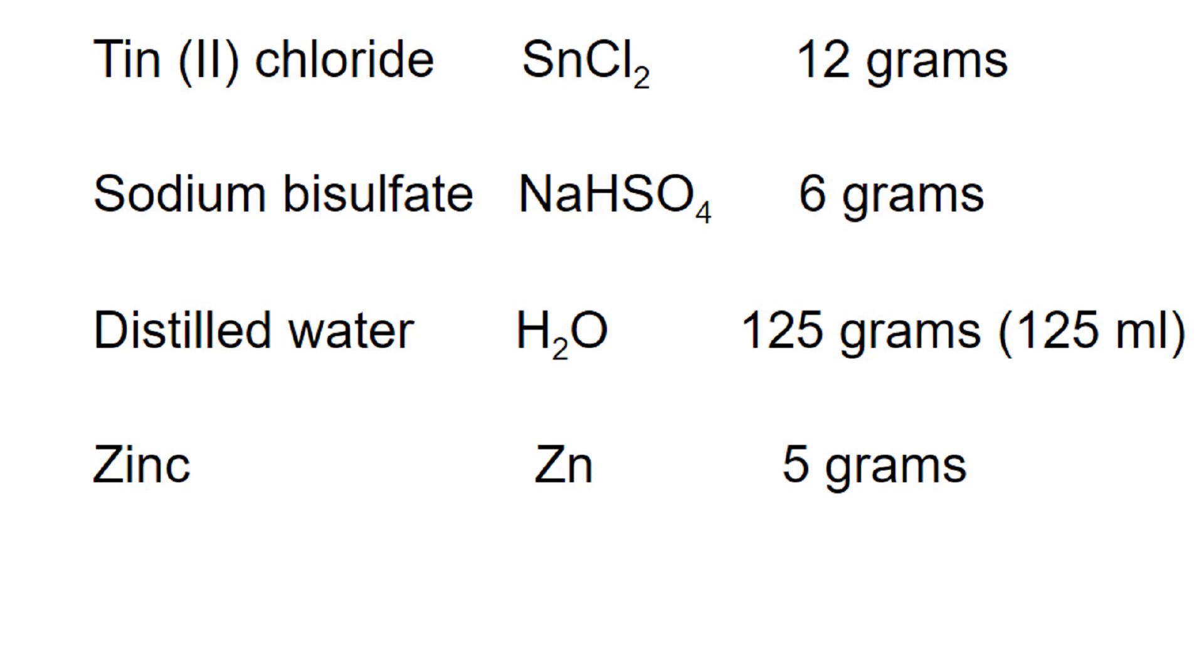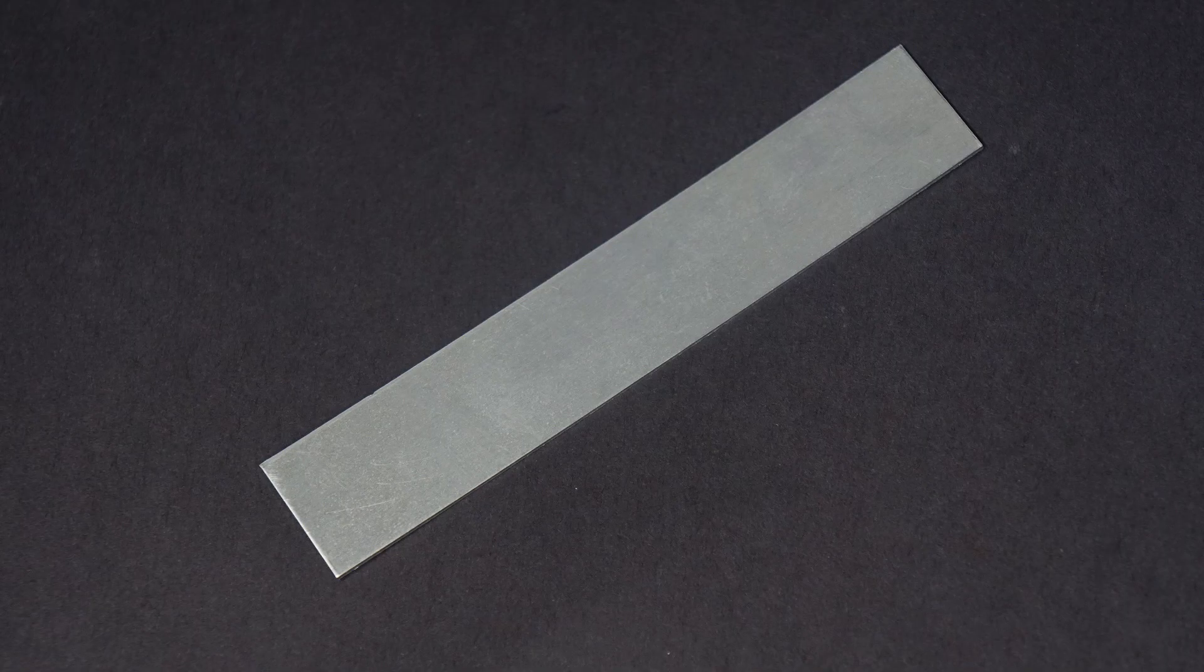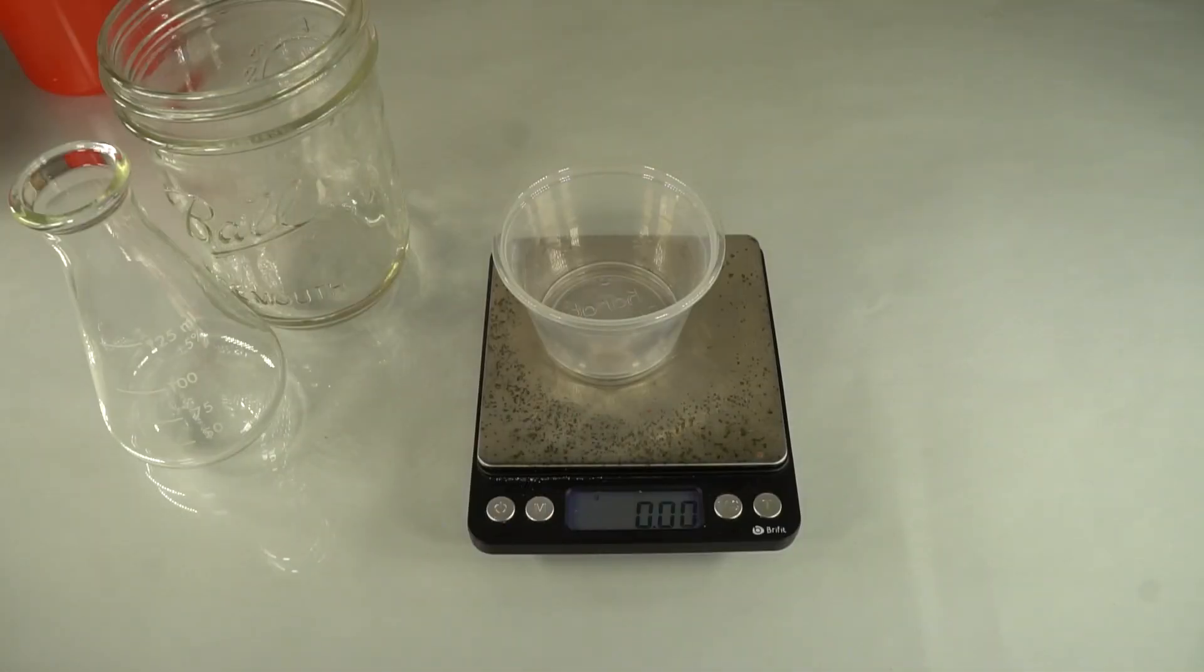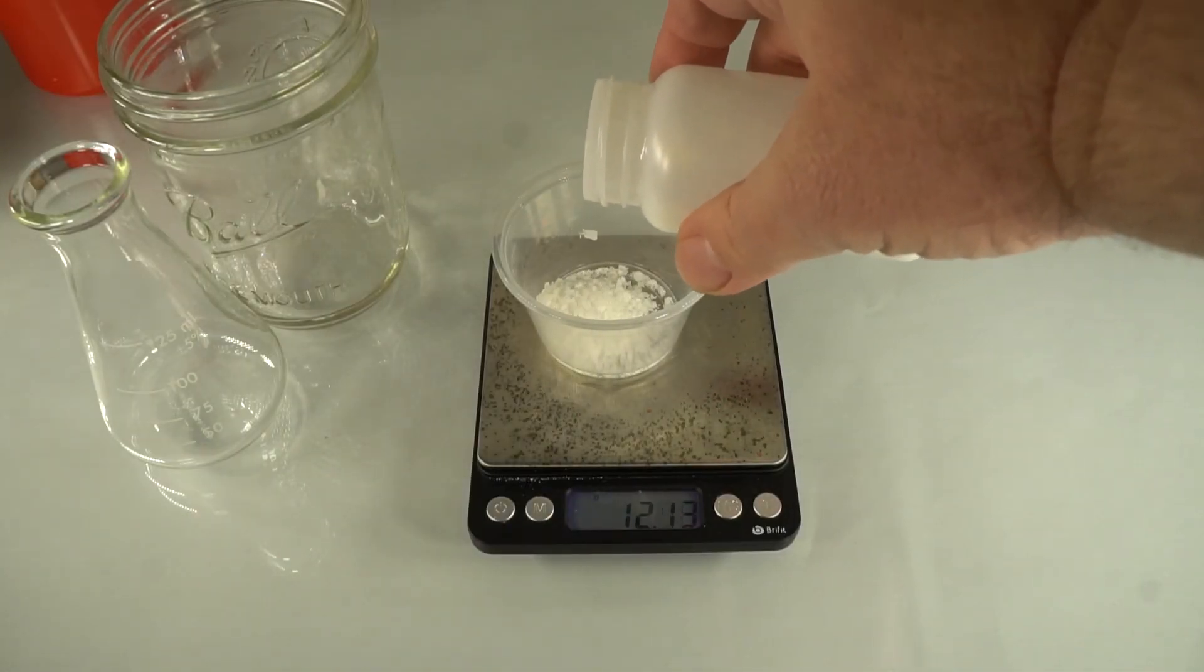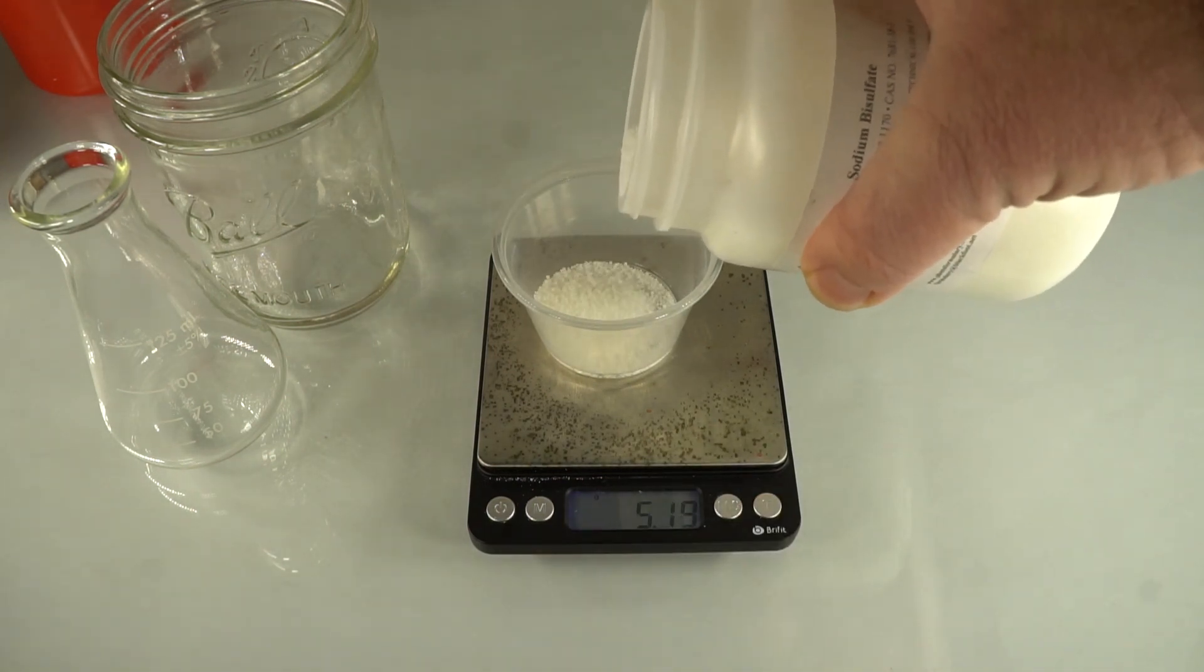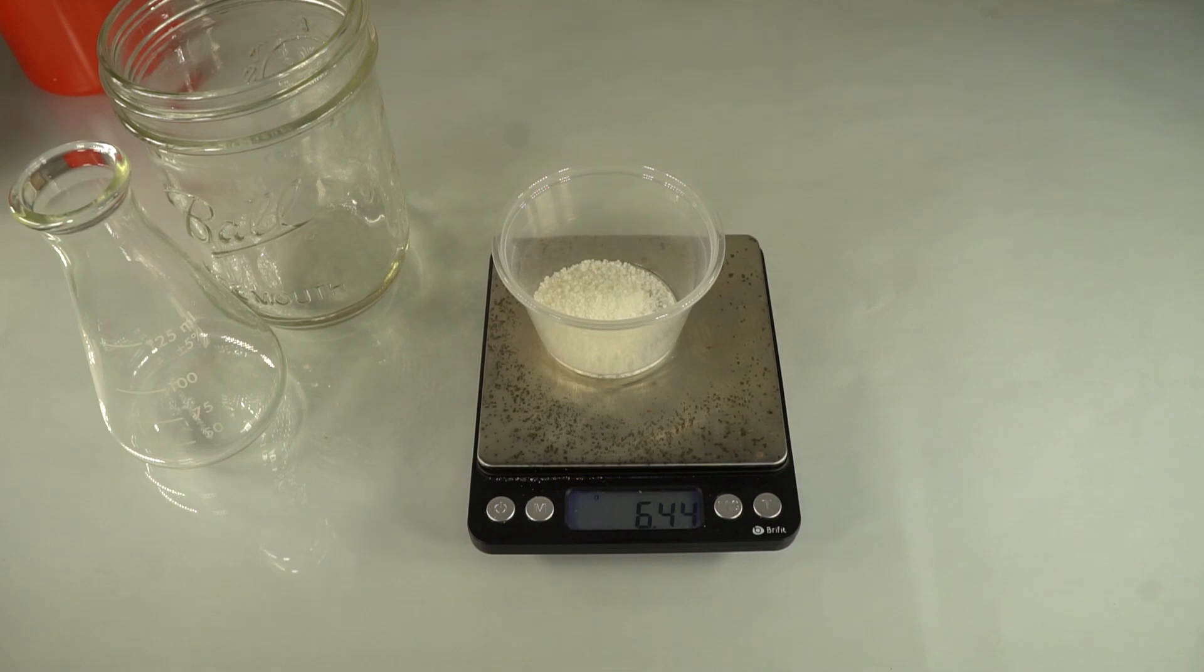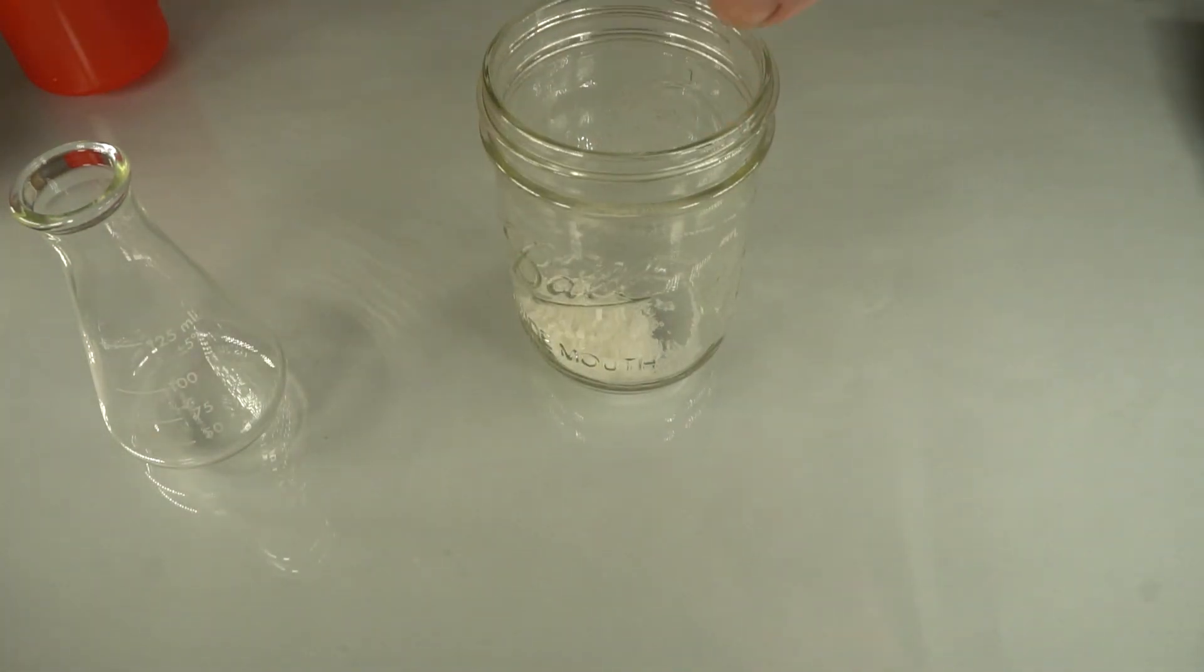To do this experiment, you need tin chloride, sodium bisulfate, distilled water, and a piece of zinc. A thin rectangular zinc anode works best. Tin chloride, although not overly toxic, can harm the skin and the eyes, so wear goggles and gloves. You can purchase it online, or you can easily make it by heating hydrochloric acid with tin metal for a few hours.